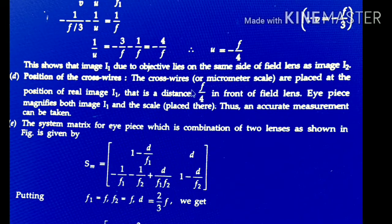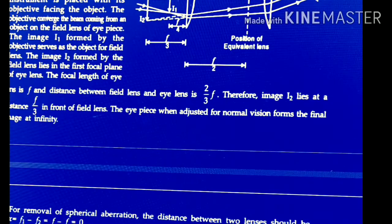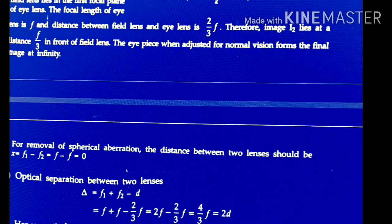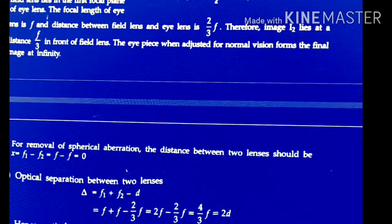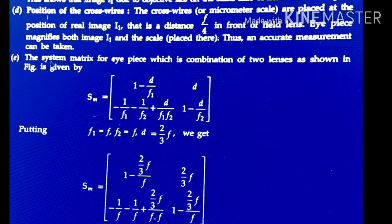The next topic is the position of cross wires, also known as the micrometer scale. This cross wire is placed at the position of the real image I1, at a distance F/4 from the field lens. So the IPS magnifies both image I1 and this scale, making measurements accurate due to the position of the cross wire.